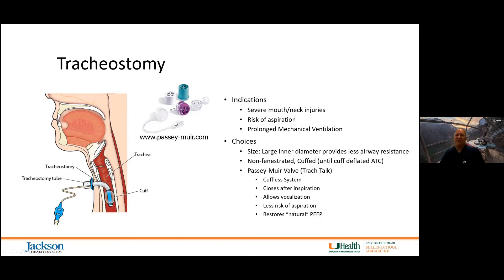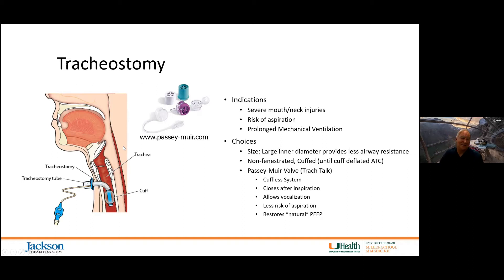To allow vocalization, we provide a Passy Muir valve — a one-way valve that allows air to come in but then closes. As air is expired through this valve, it is forced to go back up through the normal airways and pass through the trachea, so the person can take a deep breath and then speak as they pass air through the vocal folds.